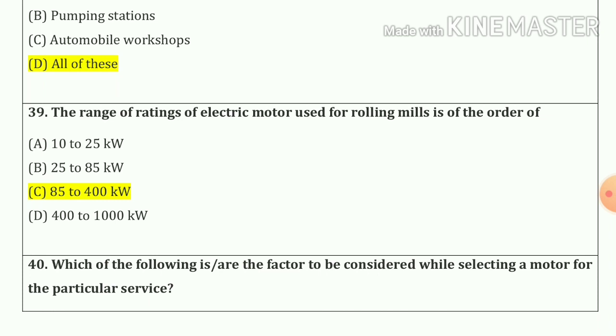Question number thirty-nine: The range of ratings of electric motors used for rolling mills is in the order of option C.